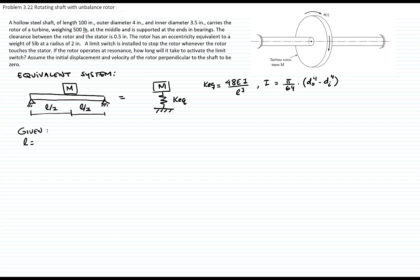The length is 100 inches, the outer diameter is 4 inches, the inner diameter is 3.5 inches, and the weight is equal to 500 pounds. We are also given that the material is steel, and the E-modulus for steel in US units is 30 times 10 to the sixth pounds over inch squared.